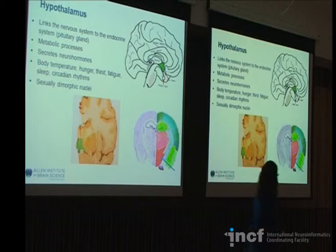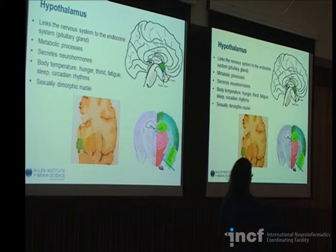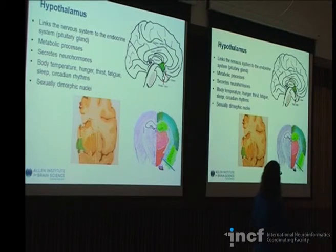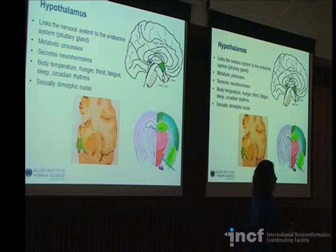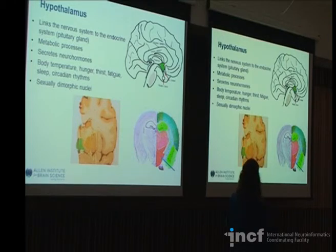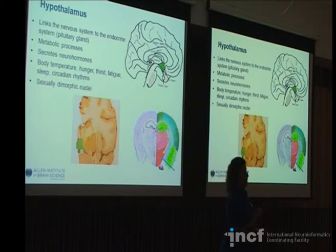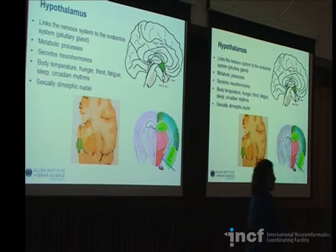The hypothalamus sits ventral and anterior to the thalamus. It's the other half of the diencephalon, which is actually comprised of four components. It links the nervous system to the endocrine system — the pituitary gland — and is involved with a lot of metabolic processes. It secretes neurohormones and helps regulate body temperature, hunger, thirst, circadian rhythm, and sleep. Interestingly, there are nuclei in the hypothalamus that are sexually dimorphic, meaning that in males and females there will be different sizes or different densities of cells, or nuclei that fluctuate based on a variety of things.